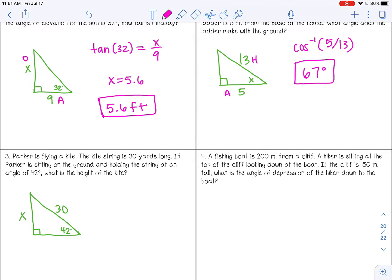So let's label our sides opposite and hypotenuse. So sine of 42 equals x over 30. So I'm going to multiply by 30 on both sides. And I get about 20.1. And we're talking about yards here.